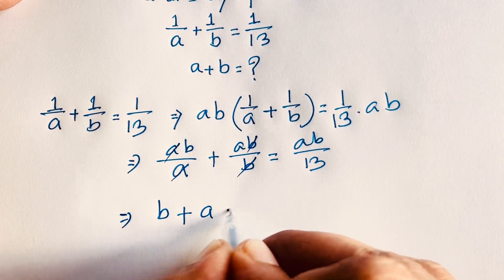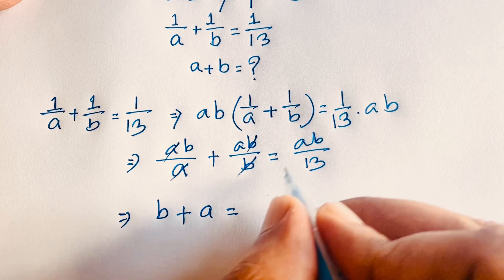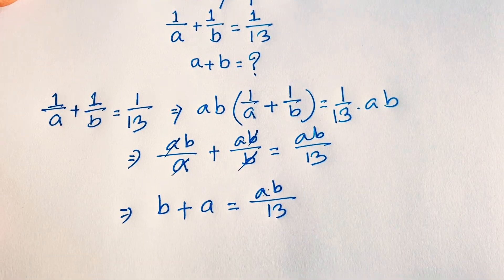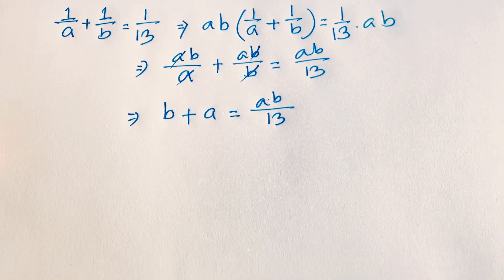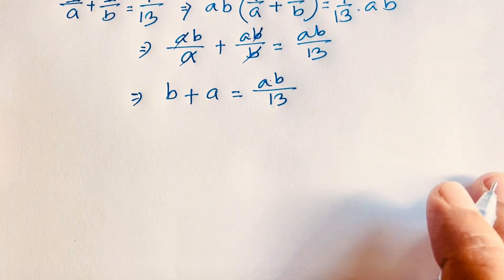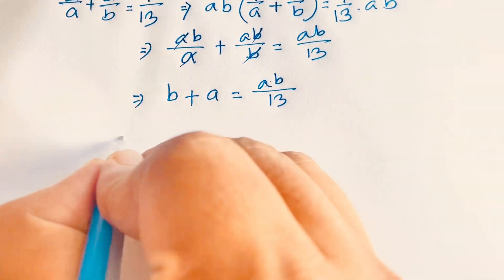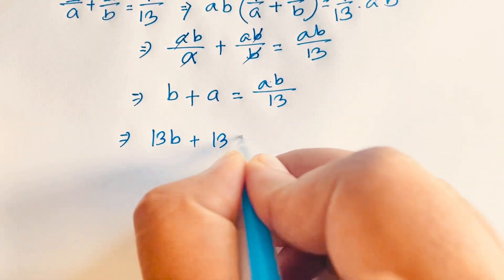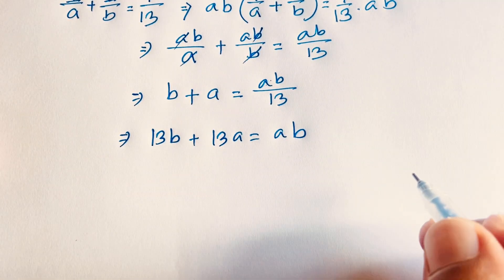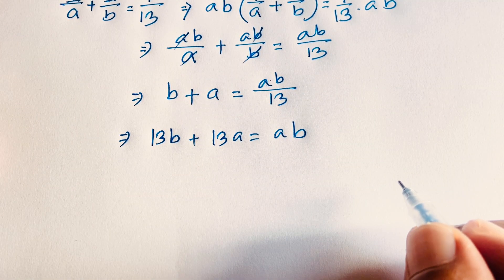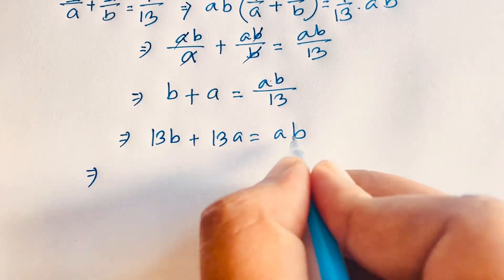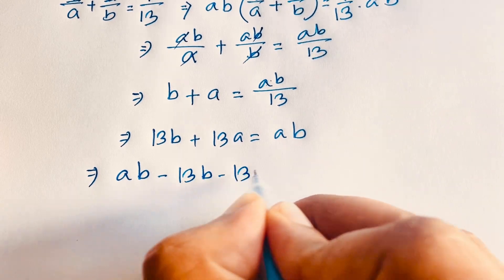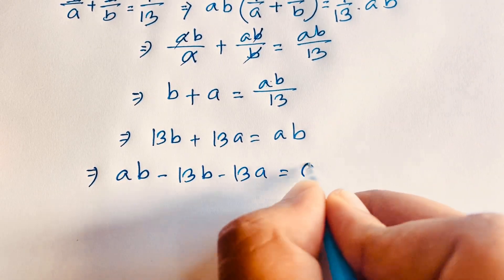You can see easily this a cancels this a, this b cancels this b, so we find b plus a is equal to ab over 13. Now if I multiply both sides by 13, this expression becomes 13b plus 13a is equal to ab. Then I rearrange: ab minus 13b minus 13a is equal to 0.